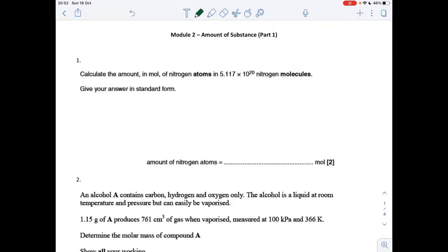First question, we've got to calculate how many moles of nitrogen atoms we've got in 5.117 times 10 to the 20 nitrogen molecules. That's obviously N2. So the number of nitrogen atoms is going to be 2 times that 5.117 times 10 to the 20.